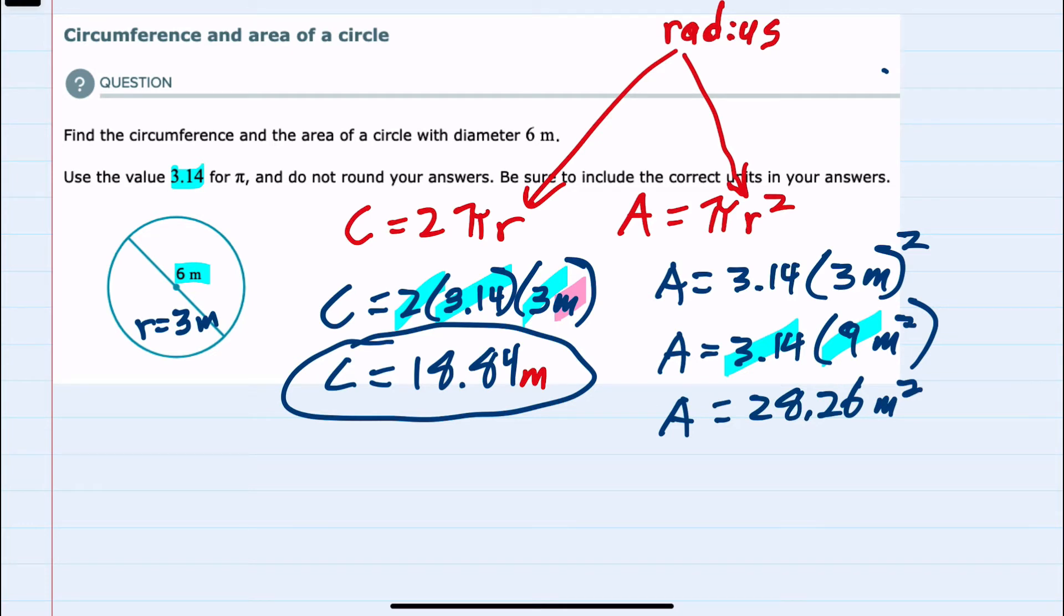And I would expect square units for area. So we found both circumference and area for this circle.